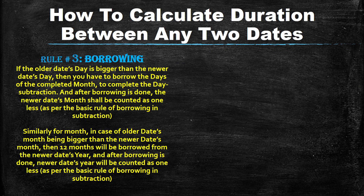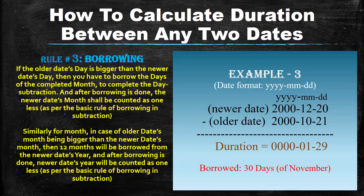Let's come to rule number three: borrowing. Sometimes during subtraction, you have to borrow because the digit you are trying to subtract from is bigger. In this duration calculation, if the older date's day is bigger than the newer date's day, then you have to borrow the days of the completed month to complete the day subtraction.